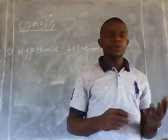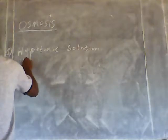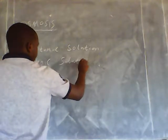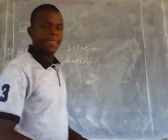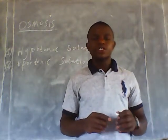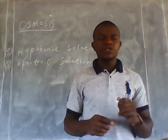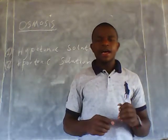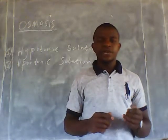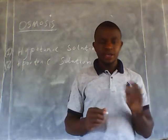A hypertonic solution is a type of solution that has a low concentration of water compared to the cell. It is also referred to as a type of solution that has low concentration of water and high concentration of solutes. When a cell is placed in this hypertonic solution, water molecules move from the cell into the solution.